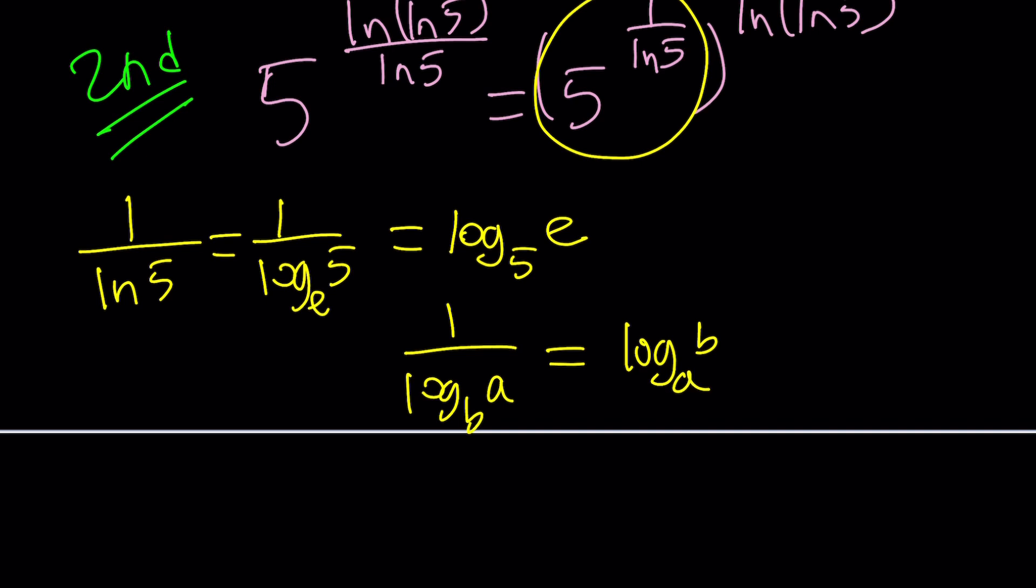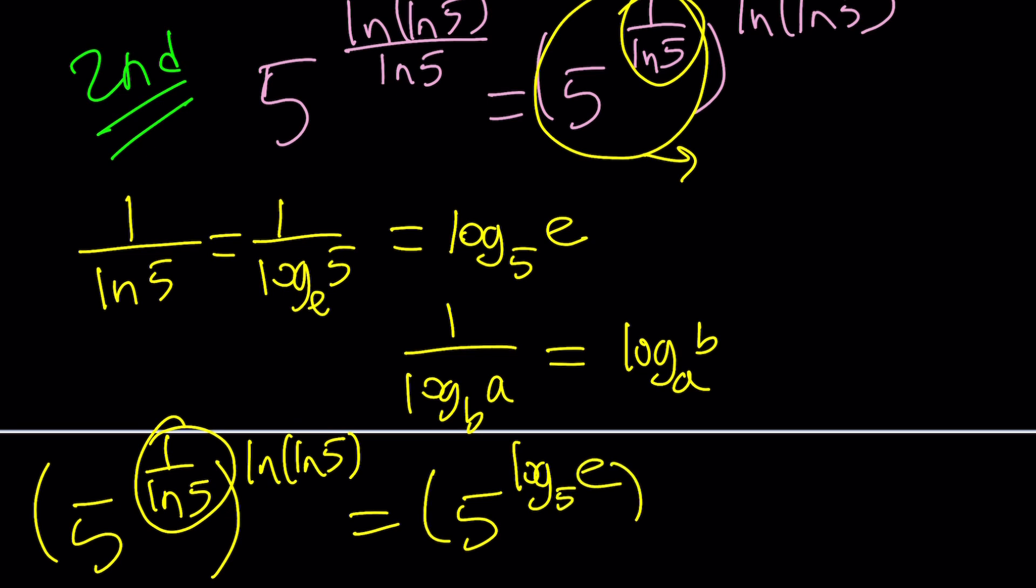So, this gives us log e with base 5, and then we're going to raise it to another power, right? It's just the ln 5 though. Actually that was wrong, not the whole thing, right? Just this part. So 5 to the power 1 over ln 5 to the power ln(ln5) can be written as 5 to the power log e with base 5, and then raise it to the power ln(ln5). See how this simplifies now.